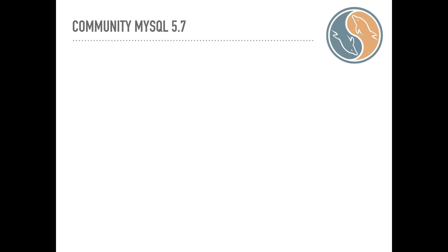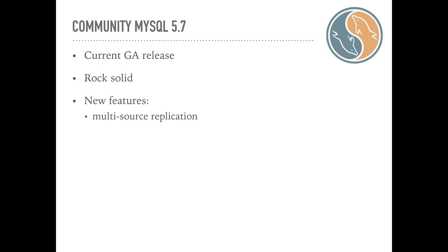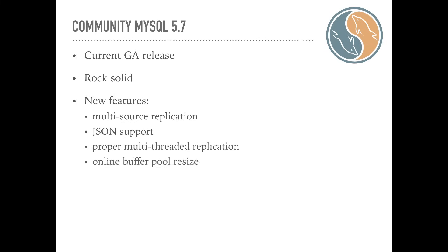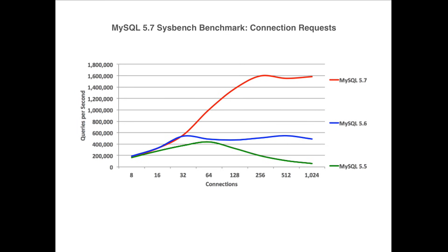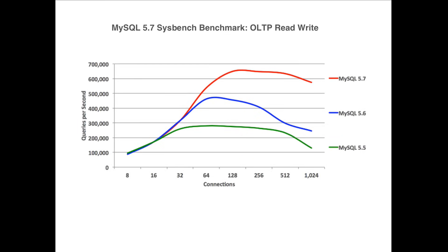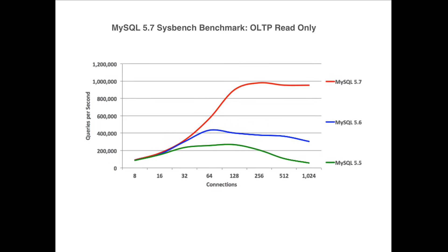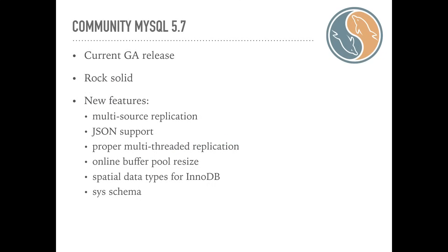Community MySQL 5.7, the newest MySQL GA release yet, is currently the server with most features, including multi-source replication, JSON support, proper multi-threaded replication, online buffer pool resize, spatial data types for InnoDB, C schema, and more. According to Oracle's benchmarks, it is the best performing MySQL server currently available. Beware that some vendors have attempted to manipulate benchmark results by using a different default configuration, so do not be confused by that.